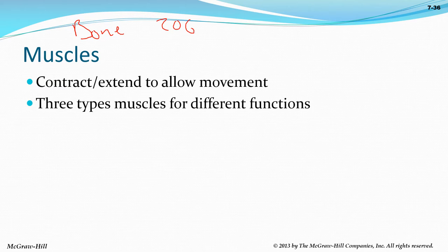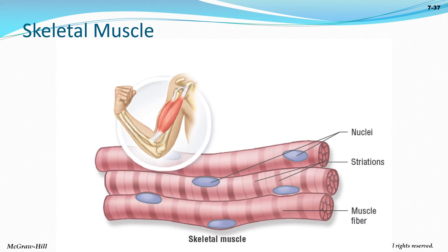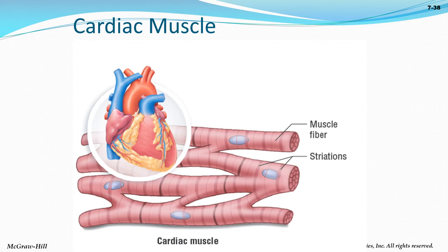Now let's go to muscles — 600 plus of them. Three different types: skeletal muscle is the only one you can voluntarily control, and it's striated — regular banding patterns under the microscope. One muscle fiber equals one muscle cell, but these cells can have multiple nuclei and are very long. Cardiac muscle looks like skeletal muscle under the microscope, except it has intercalated discs that allow very fast contractions.